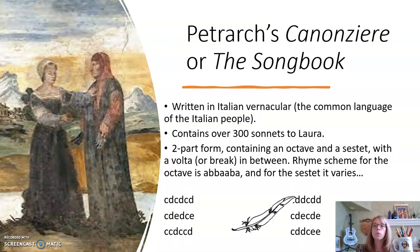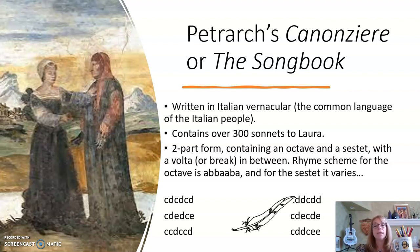Back to Petrarch. Petrarch wrote the Canzoniere — please forgive my horrible pronunciations — in English, the Songbook. This was a collection of over 300 sonnets written to the same woman, written in the Italian vernacular, or the common language of the Italian people. It was a two-part sonnet form containing an octave, which is eight lines, and a sestet, six lines, with a volta, or break in theme and/or tone, in between the octave and the sestet.